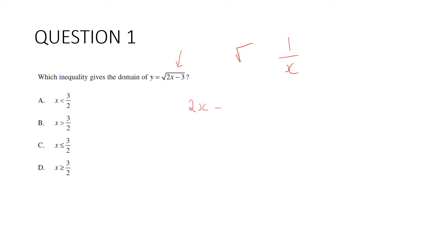So 2x minus 3 can be greater than or equal to 0. There's no problem with it being equal to 0. 2x is greater than or equal to 3, so x is greater than or equal to 3 over 2. And that's going to be d.